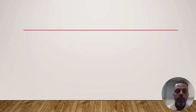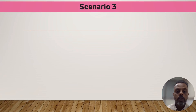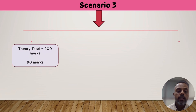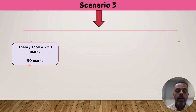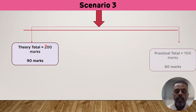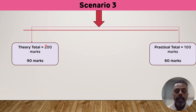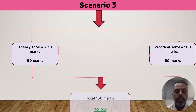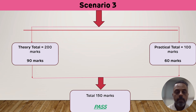Scenario number three: if a student has secured 90 marks out of 200 in theory and 60 marks out of 100 in practical — in both components the student has secured the minimum 40% — and the aggregate of the two is 150 marks, so the student is declared as passed.